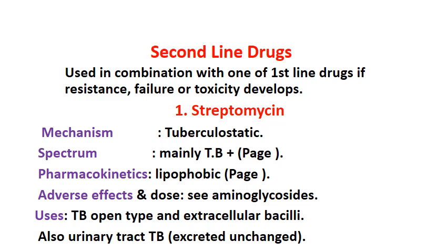The spectrum of streptomycin is mainly used in TB, but it is also effective against many Gram-negative bacilli, similar to other aminoglycosides. Aminoglycosides are commonly combined with penicillin because penicillin has the opposite spectrum — mainly against Gram-positive cocci. However, streptomycin's use should be restricted mainly to TB rather than other bacterial infections, where other preferred alternatives exist.